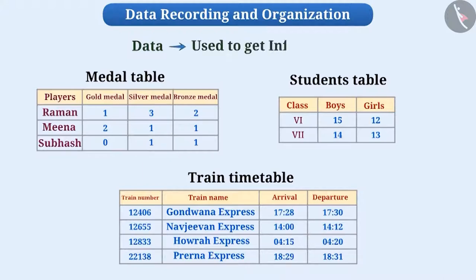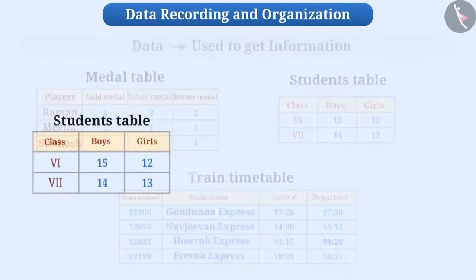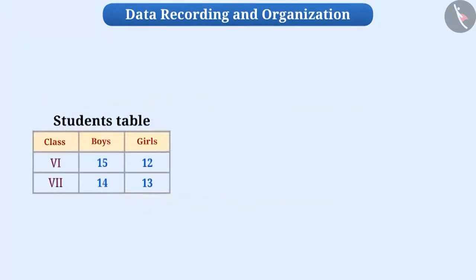We use data to get information. For example, look at this table showing the number of boys and girls in classrooms. Can you say what information we get to know with the help of this table?